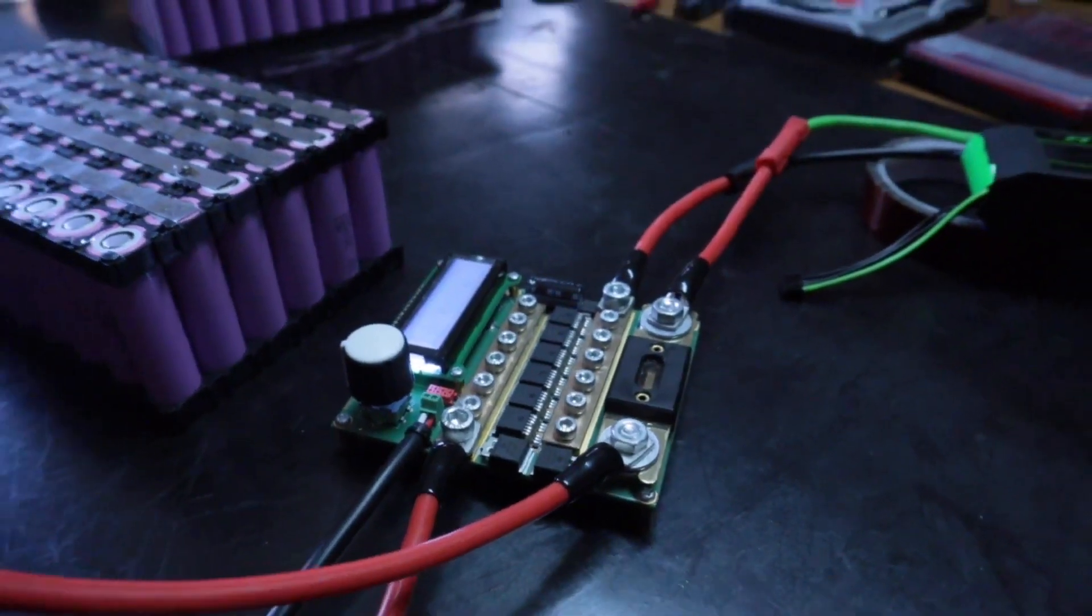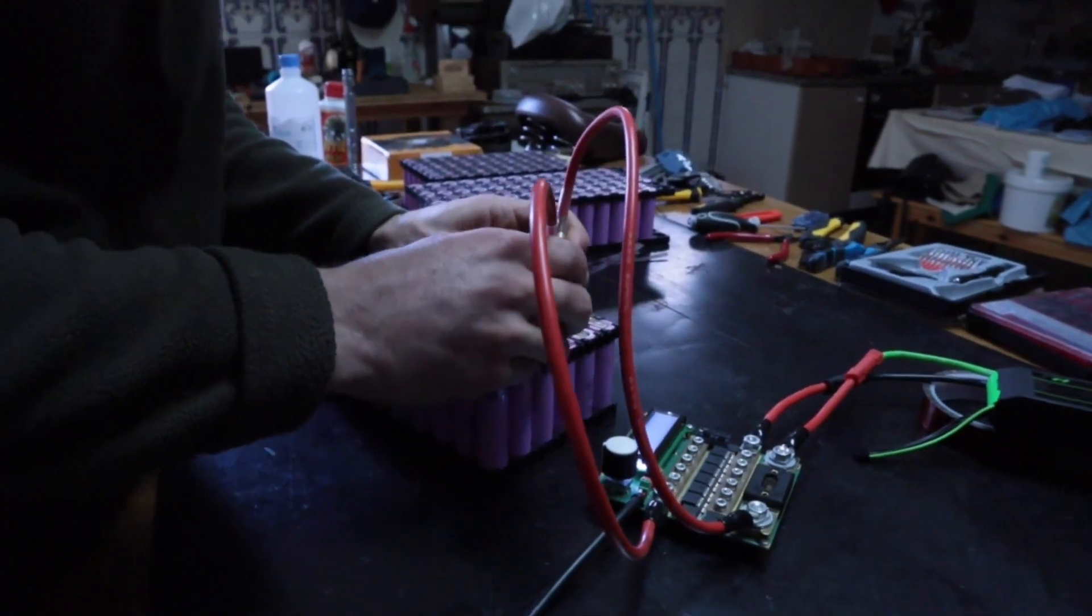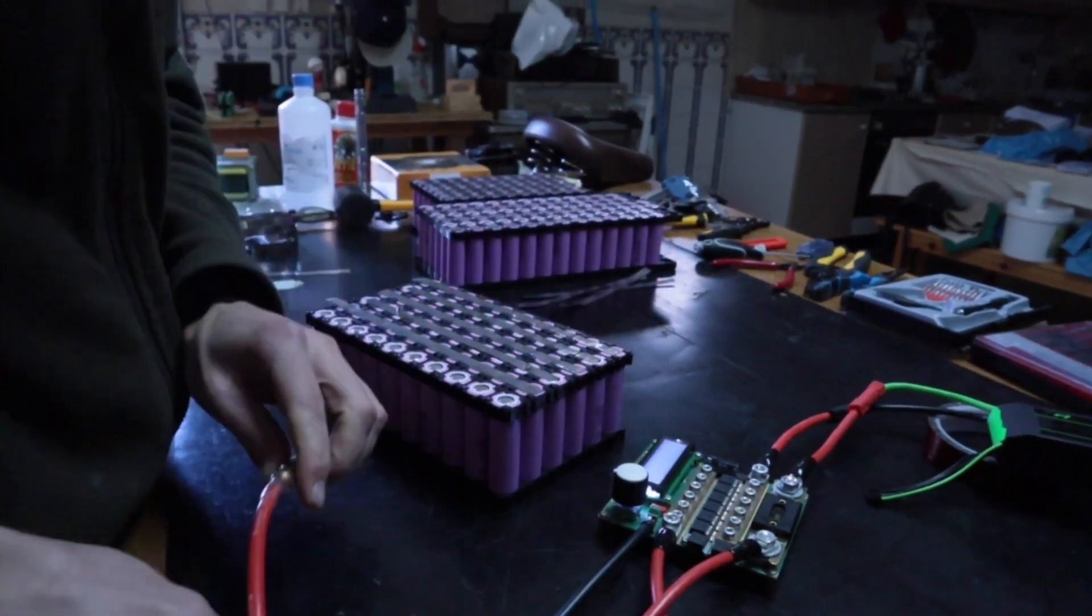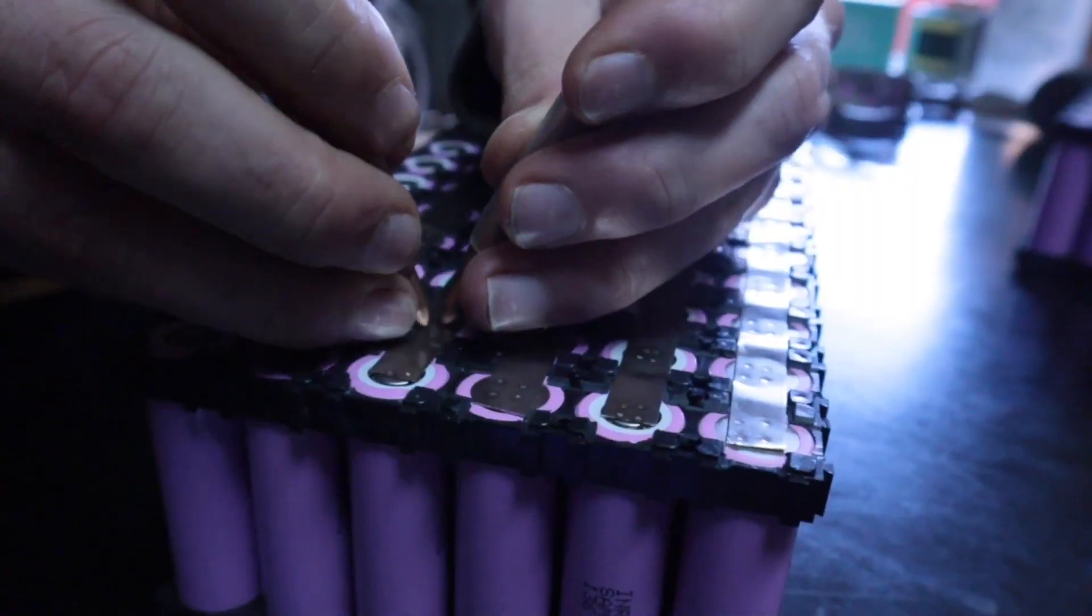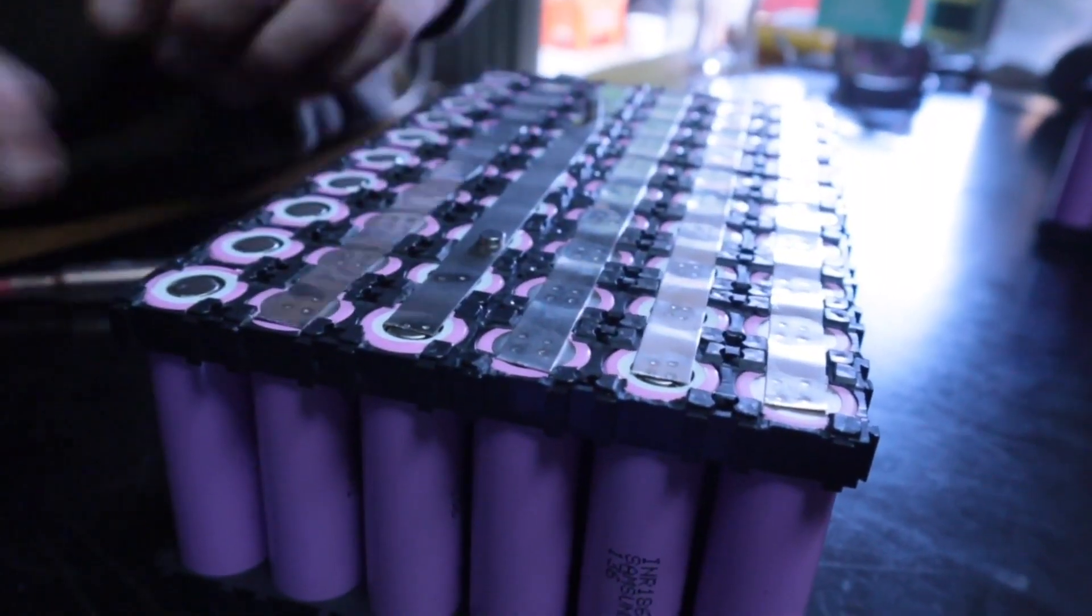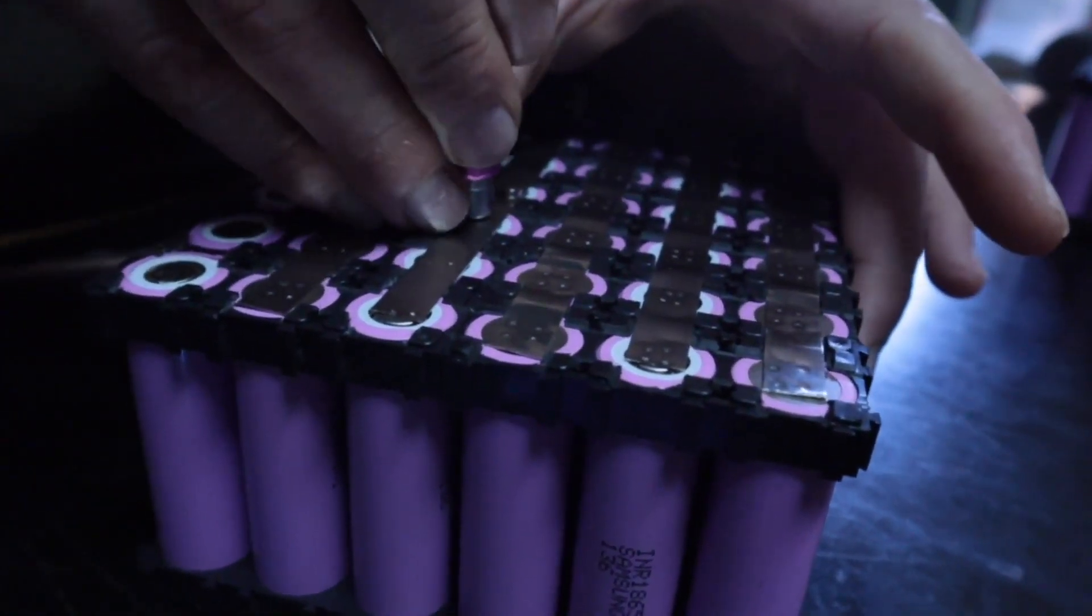I usually start welding the parallels first and then move to the series connections. Before starting, I like to test the spot welds on an old cell to check the rigidity and to fine tune the parameters for the specific thickness of the nickel strips and specifically the cells. While you are spot welding, focus on how the welds are coming together.